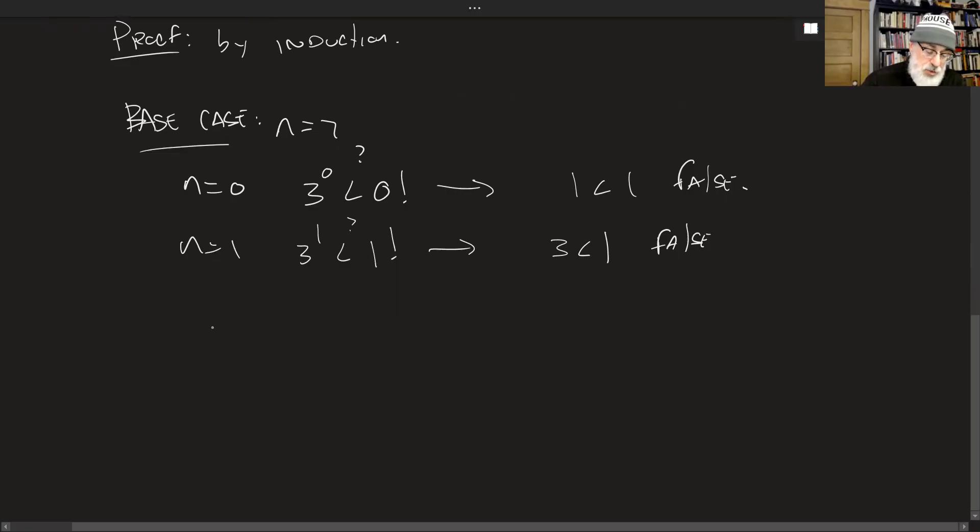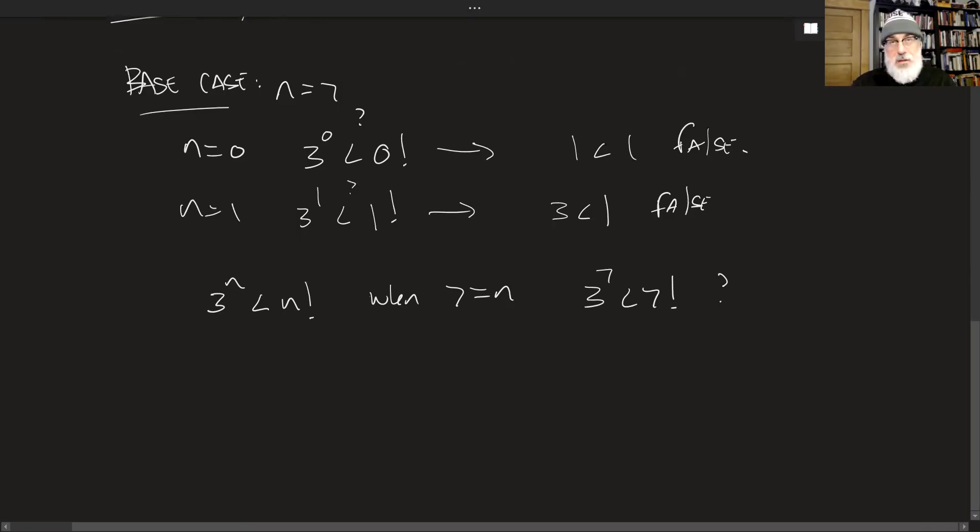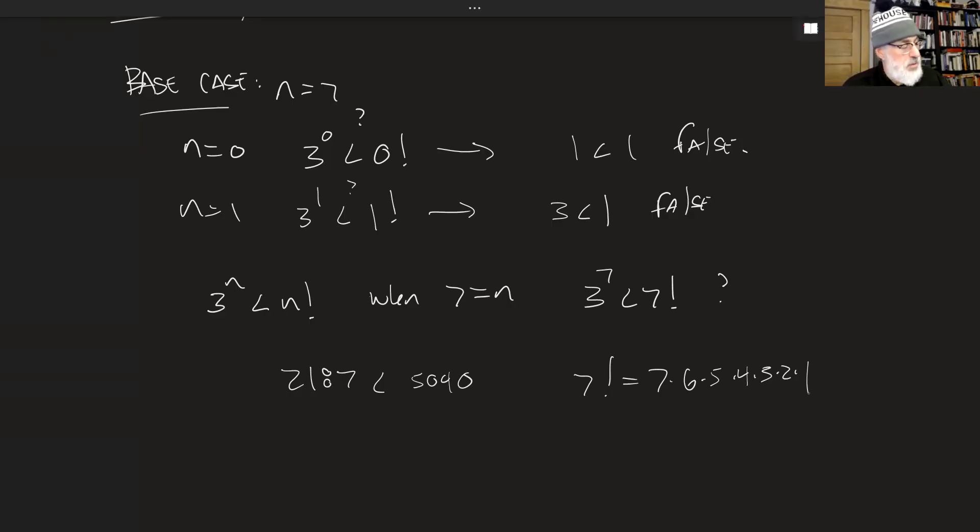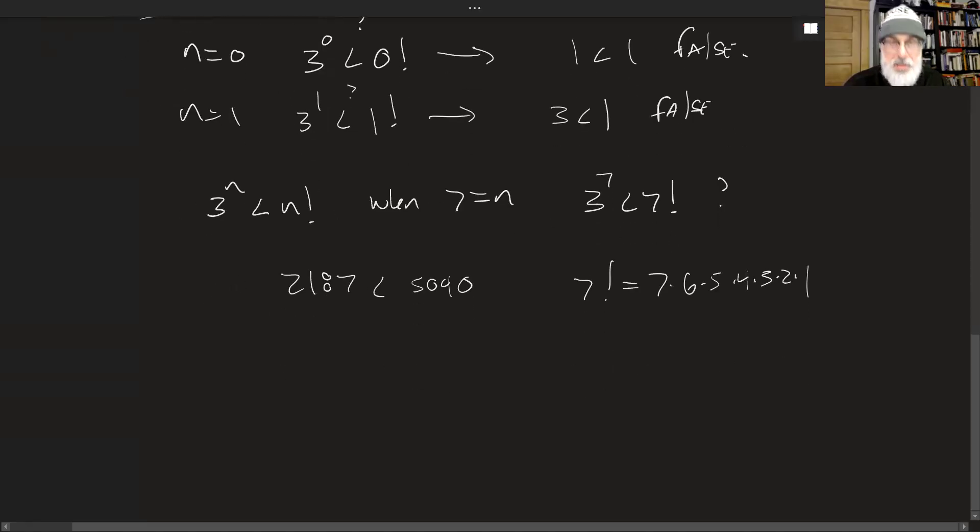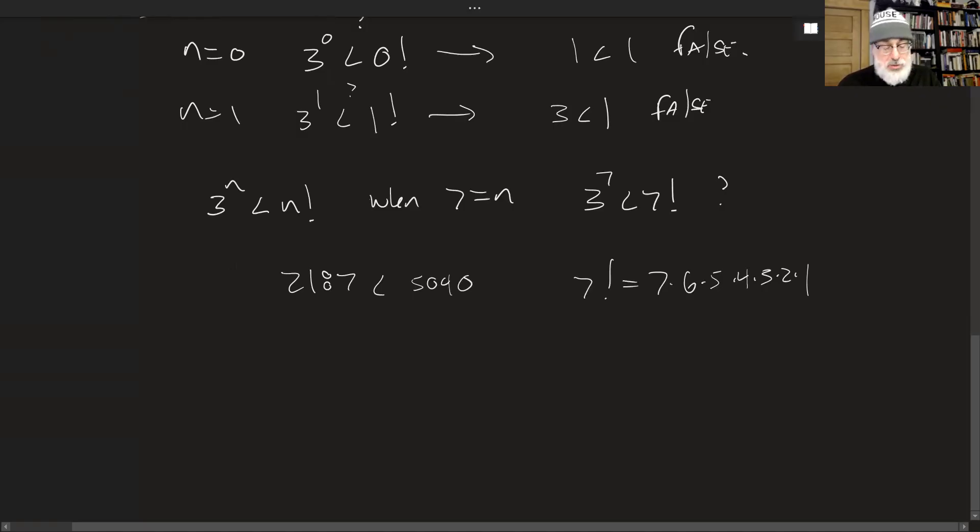So the base case will be for 7. So we want to show that is it true that 3 to the n is less than n factorial when 7 equals n. So let's look. Is 3 raised to the 7th less than 7 factorial? Now I did these obviously beforehand because I don't know off the top of my head what 3 to the 7 is or for that matter what 7 factorial is. But 3 to the 7th is 2187 and 7 factorial is 5040. And recall factorial means that 7 factorial is 7 times 6 times 5 times 4 times 3 times 2 times 1. I always include 1. I don't know why. You don't have to. Obviously anything multiplied by 1 is itself. So it's how I think of factorials anyway. So the base case holds. That is indeed true. 5040 is indeed greater than 2187. So the base case holds.